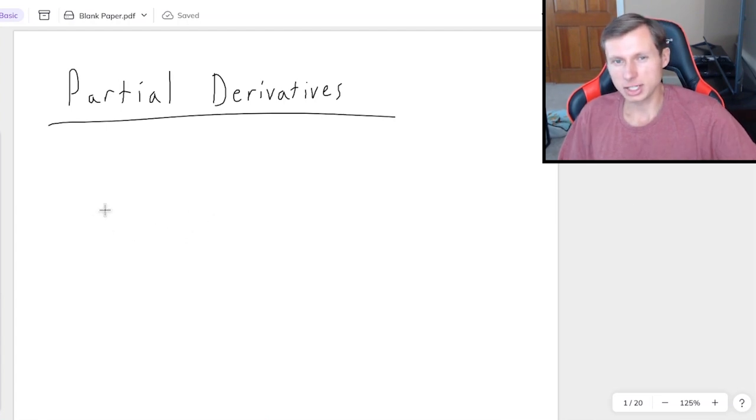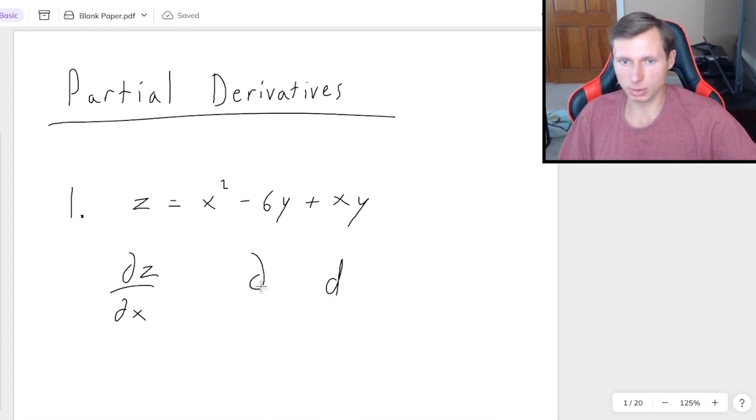So let's just start explaining it with an example problem. Let's say I have the function z equals x squared minus 6y plus xy. And I want you to find both partial z partial x, and the notation I'm using is this little curly d here, it's not a normal d anymore, it's now curly like that. That's saying the partial derivative, which I'll explain in a second. And I also want you to find partial z partial y.